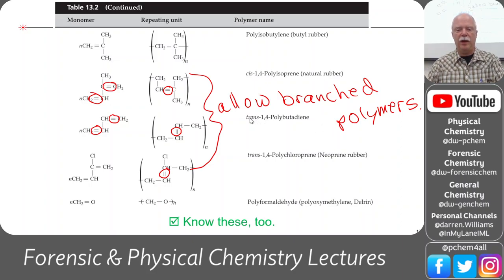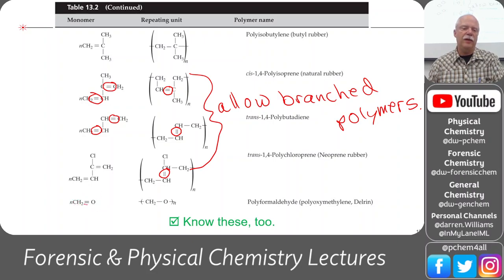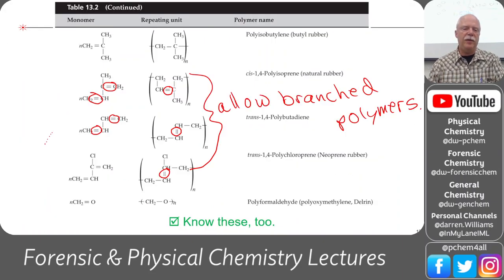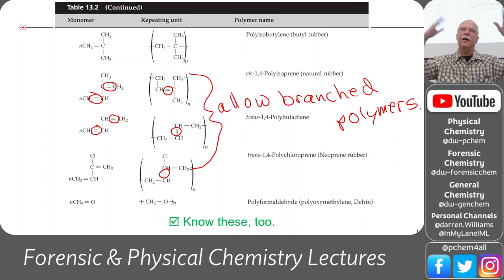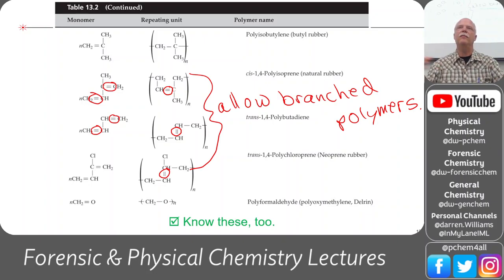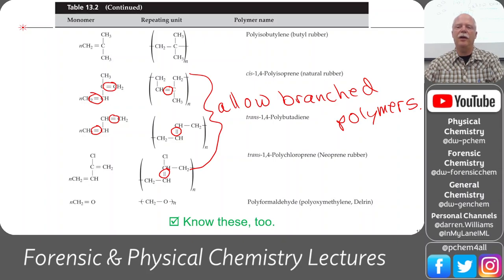Formaldehyde itself will polymerize. Instead of an ethylene molecule, you have a carbonyl group that can be polymerized. Be able to match the monomer names to the polymers—not drawing them from scratch, but identifying which monomers and polymers go together.